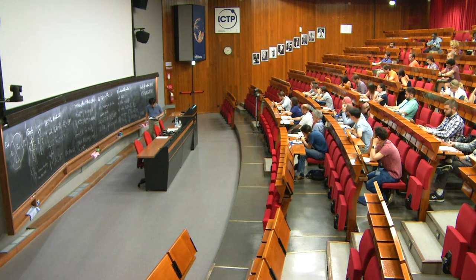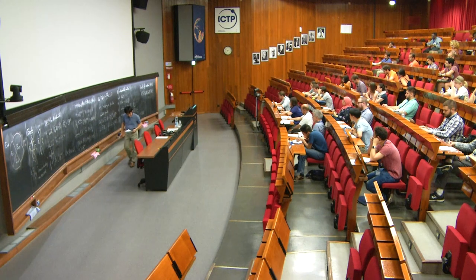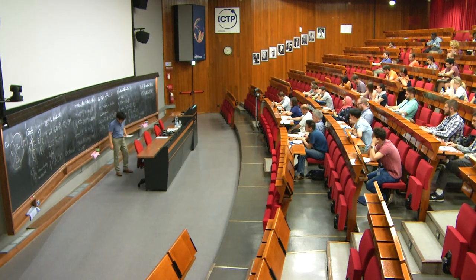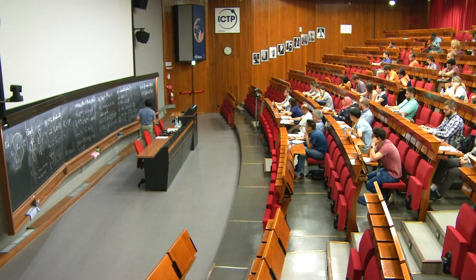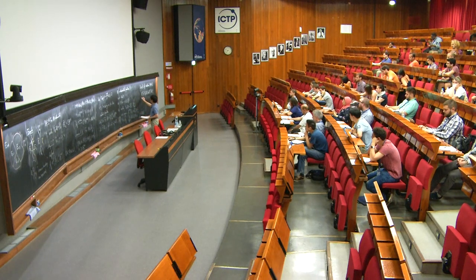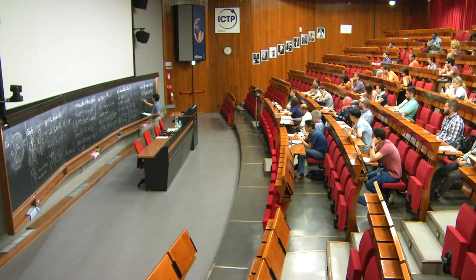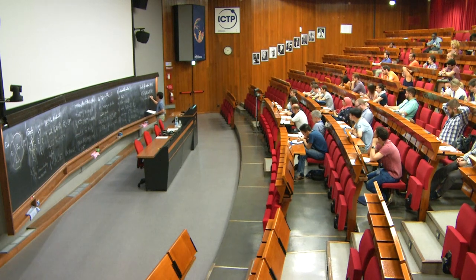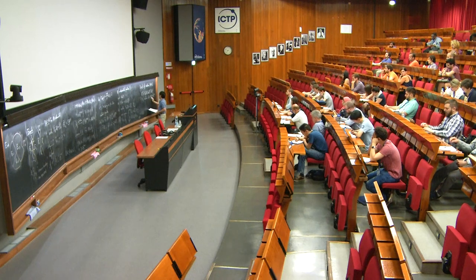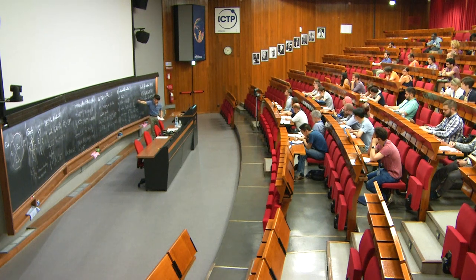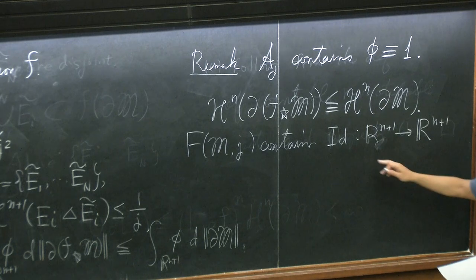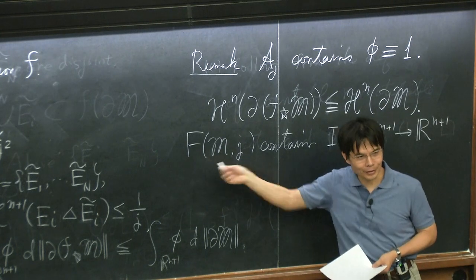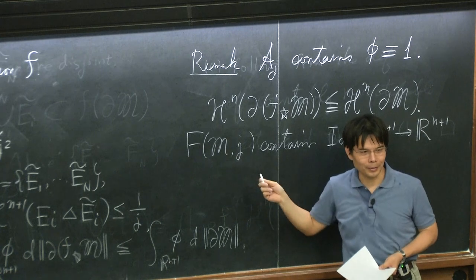Also, class F(M,j) always contains the identity map from R^{n+1} to R^{n+1}. For the identity map, all quantities are zero, so all three properties are satisfied. Thus this class is never empty — it always contains at least the identity map.